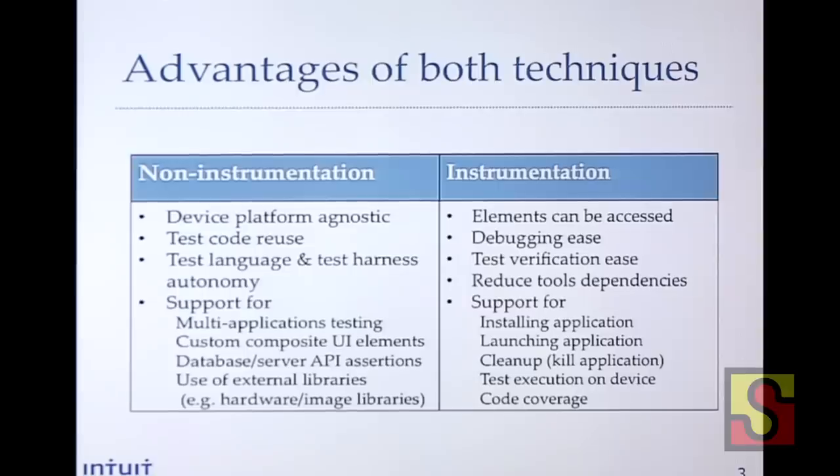The flip side is instrumentation. The recommendation is always: if you need to access your elements and verify text, go with the instrumentation approach because you get the exact text you need to validate. For example, Intuit is big on financial applications and we need to validate the user's account balance and bill payments. We can't rely on an image recognition approach — unless it's really stable. I'll sleep better at night knowing the exact content from the text-based instrumentation approach is correct.